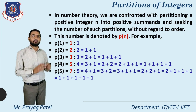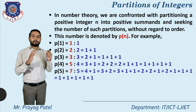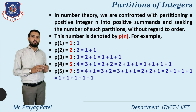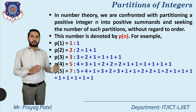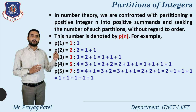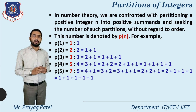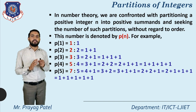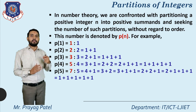For p(5), p(5) equals 7, meaning seven different ways are available for writing 5: 5; 4 plus 1; 3 plus 2; 3 plus 1 plus 1; 2 plus 2 plus 1; 2 plus 1 plus 1 plus 1; and five times 1. So basically partition means how many different ways are available for writing a particular number.